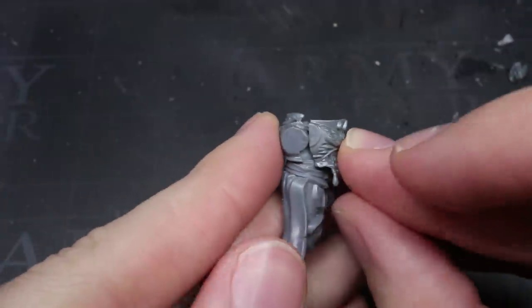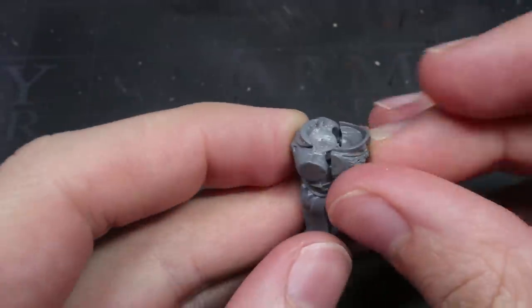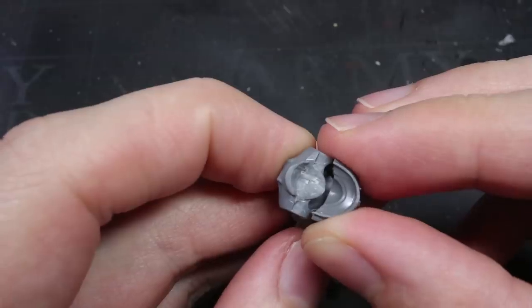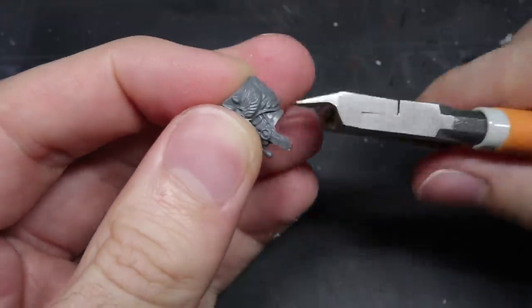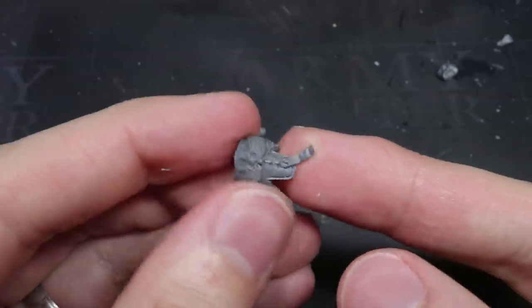This allowed me to see that the areas either side of the armour's abdominal armour plate also needed to be removed. Again, these were clipped away at first and then trimmed back to create a smooth surface once again.